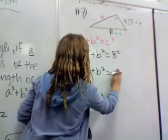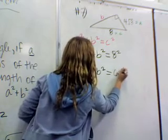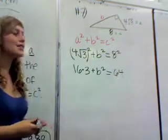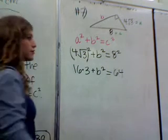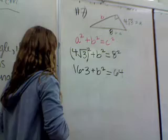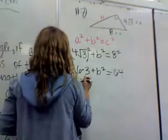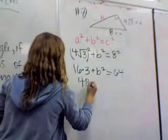And 4 times 4 equals 16. So, there you go. Now, it's 48. 48 plus B squared equals 64.